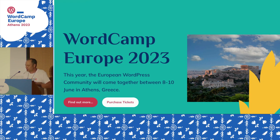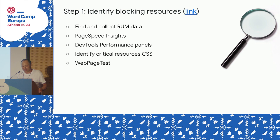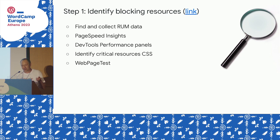This is the WordCamp Europe 2023 website — we're all probably pretty familiar with this from checking the schedule. I decided to use this to run some tests and see if there's anything blocking on it. How do you go about doing that? I mentioned RUM data. We're going to talk about PageSpeed Insights, Chrome DevTools performance panels, how to use them to identify critical CSS, and then a third-party service called WebPageTest. These are just some tools I like to use — I'm not promoting them as the only options.